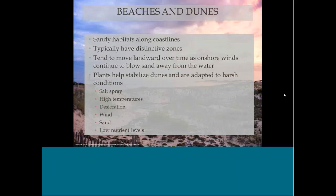These habitats tend to move landward over time as onshore winds blow sand away from the water towards inland. The plants that live in dune habitats are really specialized and help stabilize the dunes — they have to deal with salt spray, high temperatures, desiccation, wind, sand, and low nutrient levels.